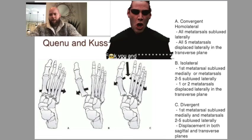There's B, which is isolateral, where either the first metatarsal goes medially or two through five go laterally. It's an either or. Isolateral. Homolateral means all move lateral. Isolateral means one moves lateral, or medial if it's the first metatarsal.